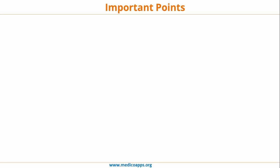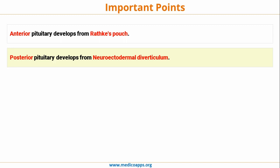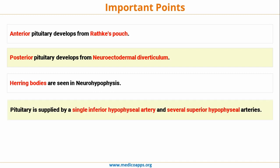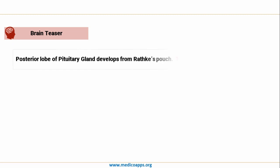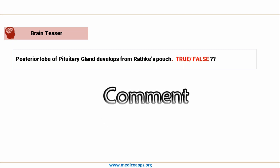Key points to remember: the anterior Pituitary develops from Rathke's Pouch; the posterior Pituitary develops from the Neuroectodermal Diverticulum; Herring's Bodies are seen in the Neurohypophysis and store ADH and Oxytocin produced by the Hypothalamus; the Pituitary is supplied by a single inferior Hypophysial Artery and several superior Hypophysial Arteries; and the Hypothalamo-Hypophysial Portal System helps the Hypothalamus communicate with the anterior Pituitary via neurotransmitters. Brain Teaser: the posterior lobe of the Pituitary Gland develops from Rathke's Pouch — true or false?